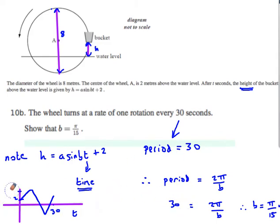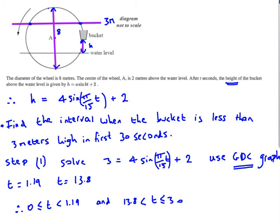The maximum is 6 and the minimum is minus 2, and the period is 30 seconds. For part C, we've just worked out the formula: H = 4 sin(π/15 · t) + 2. That's the formula that gives us the height.